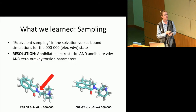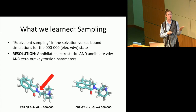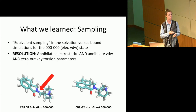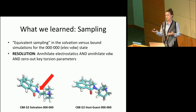To resolve the problem of the guest being locked in two different conformations, we decided to continue with annihilating both the electrostatics and the van der Waals. Additionally, if there is a key torsion within one of the molecules — for example, a key torsion in Guest 2 — we would then scale that torsion down to zero during the annihilation of the van der Waals.